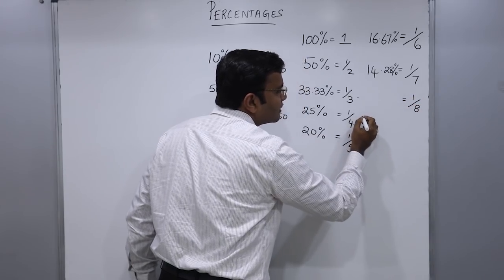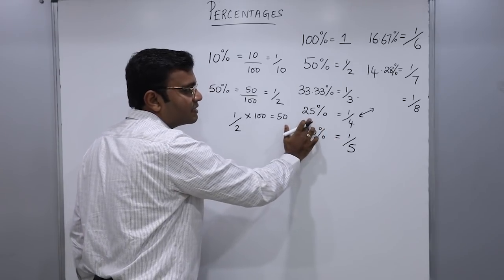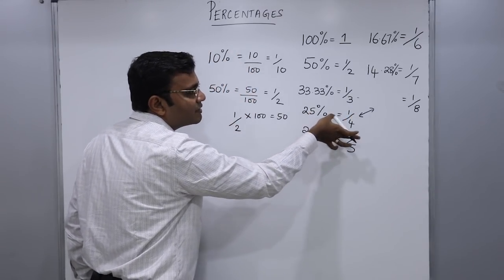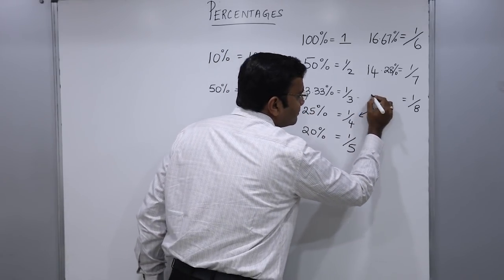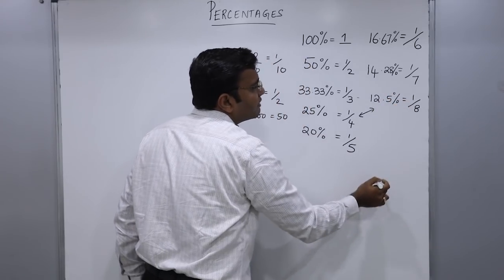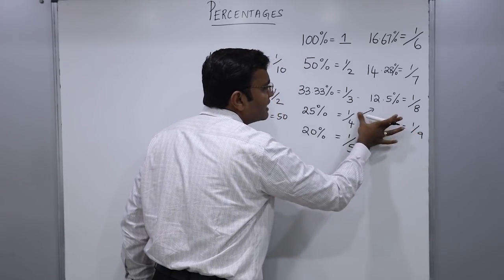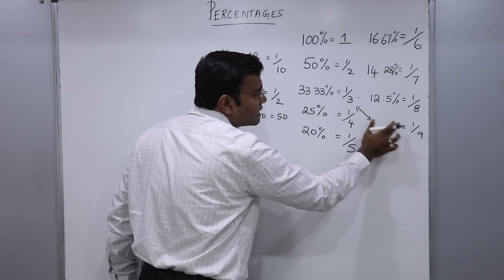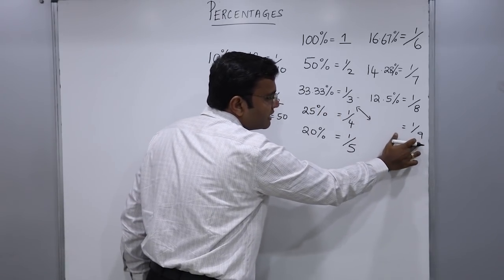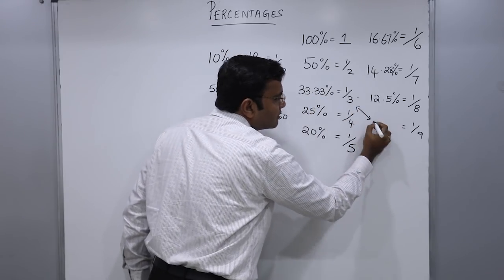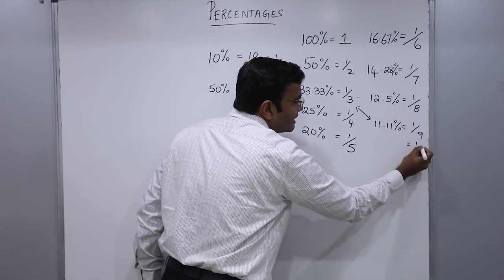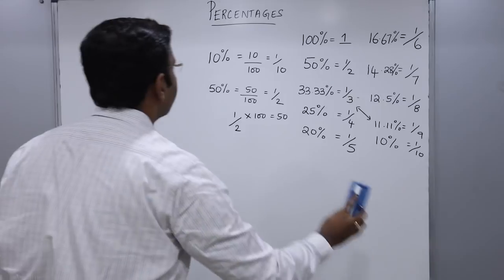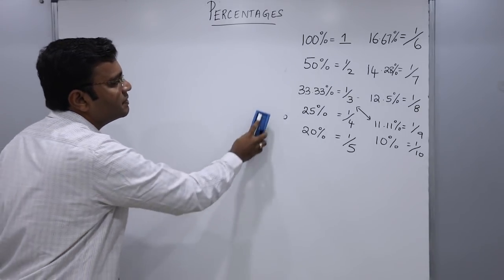For 1 by 9, the connection is with 1 by 3. Instead of dividing by 2, divide by 3: 33.33 divided by 3 gives 11.11 percent, so 1 by 9 is 11.11 percent. And 1 by 10 is 10 percent. These are the base values you should remember when it comes to percentages. We'll now look at a few questions to see how we can apply these fractions when solving percentage questions.